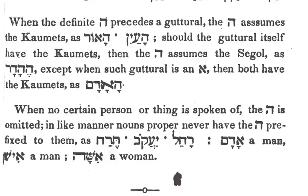However, Ha-Adam — 'a man' — Ish — 'a man' — and Isha — 'a woman' — can take the He-Hayidiah because they are not proper nouns. And that's the end of this section.